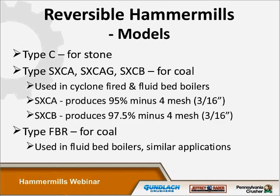Looking at reversible hammer mills, there are several models: the Type C, used in the stone market; the Type SXC, used to prepare coal for cyclone boilers and historically in steel mills to prepare coking coals; and the FBR model, specifically designed for the fluid bed boiler market. I'll go into each and show you the differences for each model.